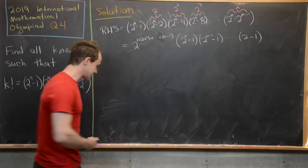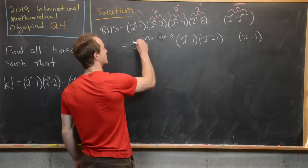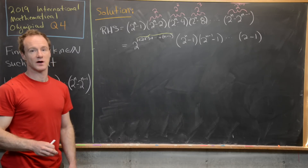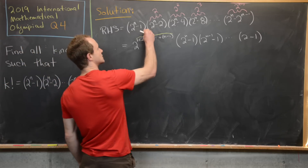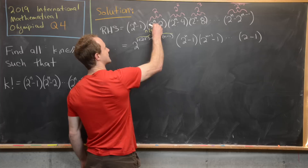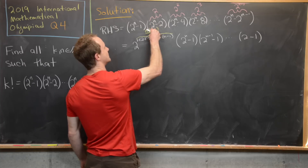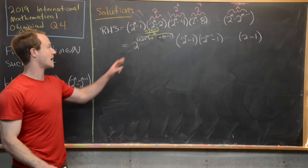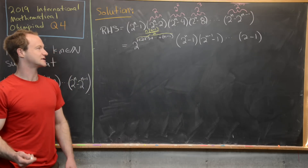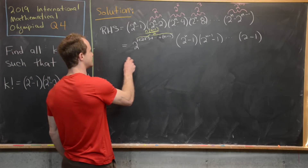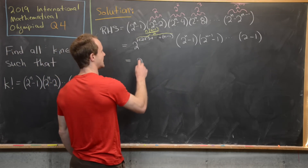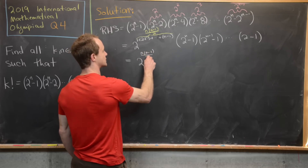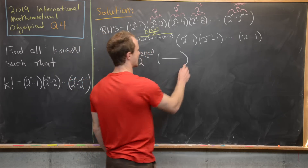So if I do that, I get two to the power of one plus two plus three plus all the way up to n minus one. Now I want to use the fact that this is a triangular number — the sum of the first n minus one natural numbers — and there's a nice closed formula for that. If you're preparing for a math Olympiad, that should be standard: it's n times n minus one over two. So we've taken the right hand side and written it as two to the n times n minus one over two times something else.